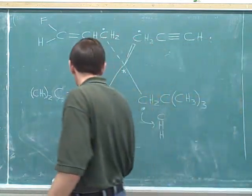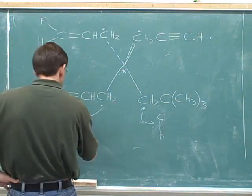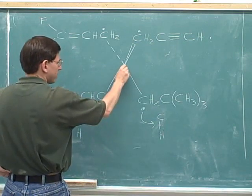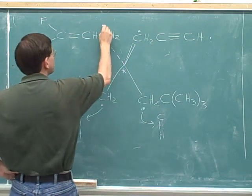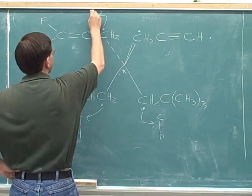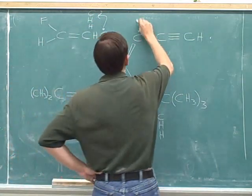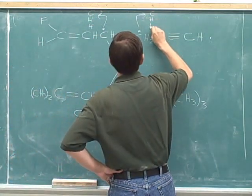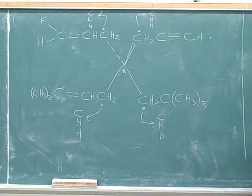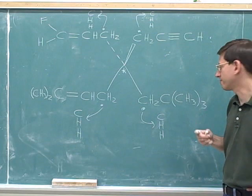What are the three atoms that this carbon is attached to? It's attached to this carbon and two hydrogens. And of course, we don't go backwards and count the stereocenter. This carbon is attached to a carbon and two hydrogens. And this carbon is also attached to a carbon and two hydrogens. So we continue to have a four-way tie, and now we have to move all these dots one atom further out.